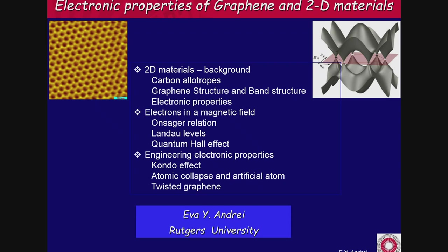The second part is that because all the atoms are on the surface — none are hidden anywhere — we can very easily manipulate their properties. We can change the electronic properties at will without using any chemistry. For example, you can stretch, bend, fold, or cut a piece of two-dimensional material like graphene and each time you get new electronic properties.